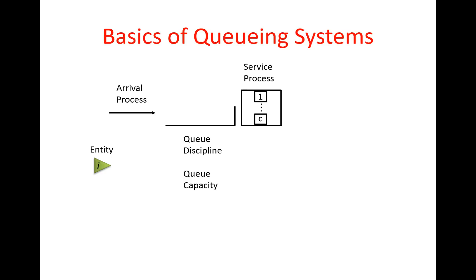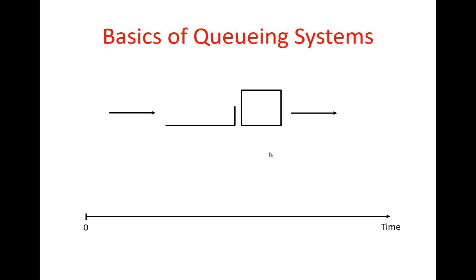The server also has its own properties. We have service times which are random variables, so the service process is also a stochastic process. We may have multiple parallel servers in our station, and we denote the capacity of the server with C. Finally, we have the departure process — parts are processed in the server and then leave the system.